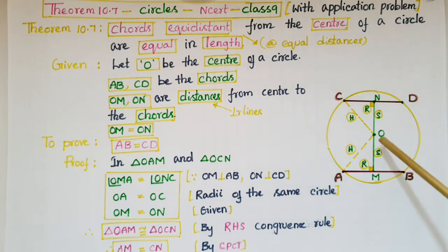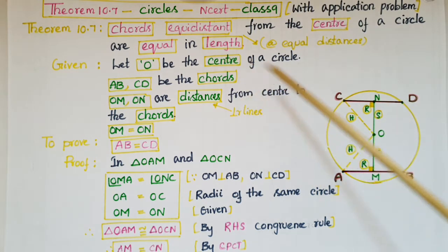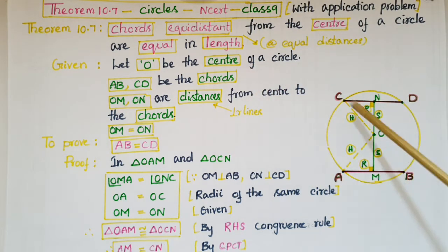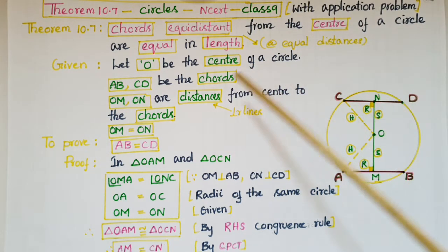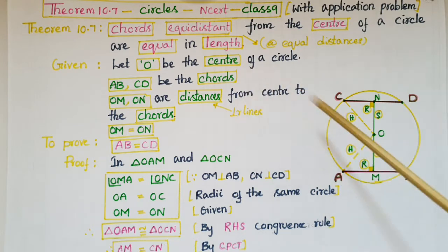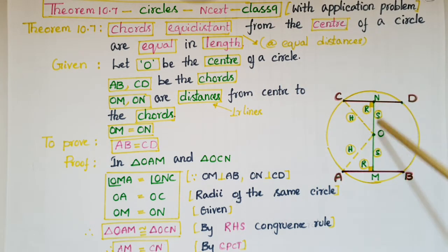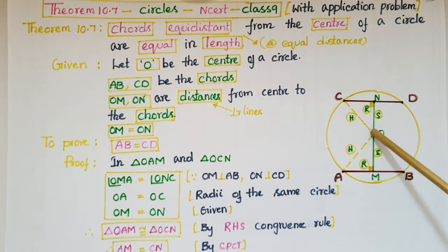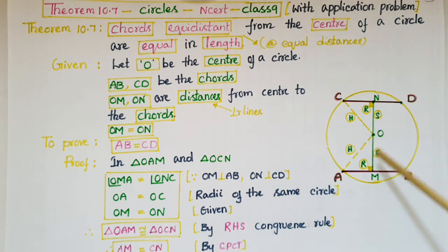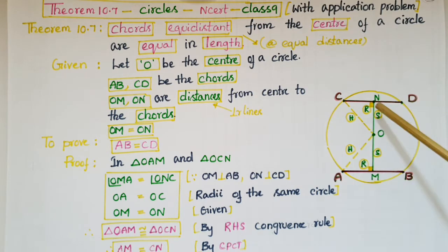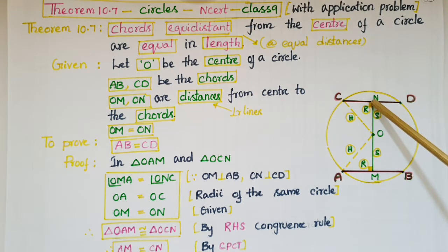Let O be the center of the circle, and A, B, C, D are the chords. OM and ON are the distances from the center of the circle to chord AB and to chord CD.